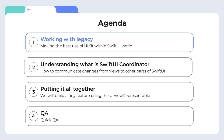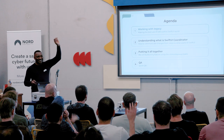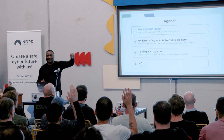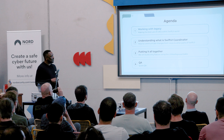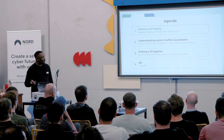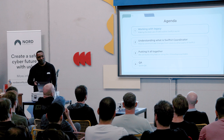The agenda covers: working with legacy code and making the best use of UIKit within a SwiftUI world. We're also going to talk about understanding what a SwiftUI coordinator is, how to communicate changes from UIKit views to other parts of SwiftUI, and then putting it all together. We'll also have a Q&A section.